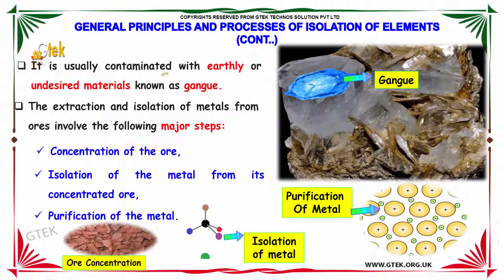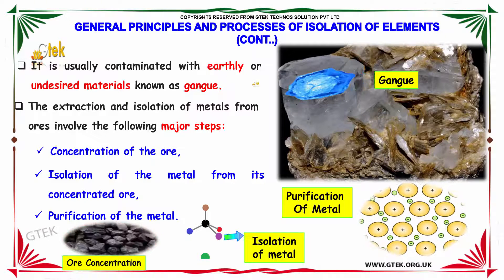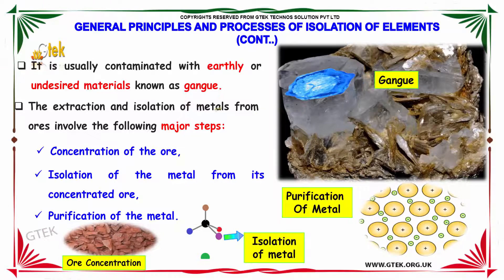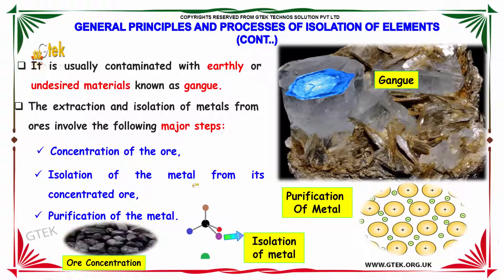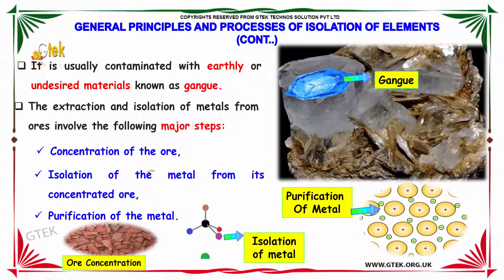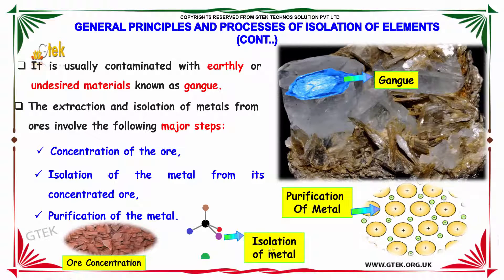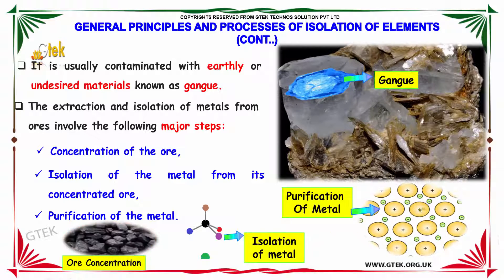Such minerals are known as ores. Rarely does an ore contain only the desired substance — it is usually contaminated with earthly or undesired materials, known as gangue. The extraction and isolation of metals involve the following major steps: the concentration of ore, isolation of metal from its concentrated ore, and finally the purification of metal.